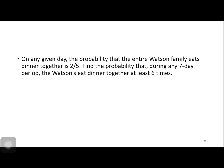For example, let us solve this problem. On any given day, the probability that the entire Watson family eats dinner together is 2 over 5. Find the probability that during any 7-day period, the Watsons eat dinner together at least 6 times. So for our n we have 7, our p is 2 over 5 or 0.4, and q is equal to 0.6.